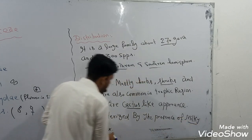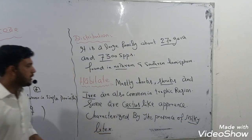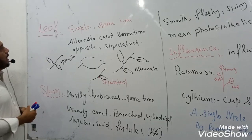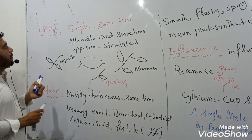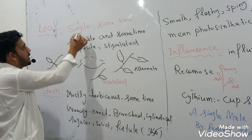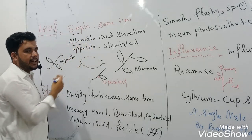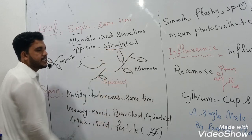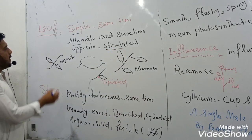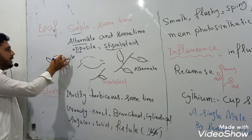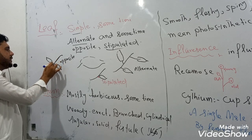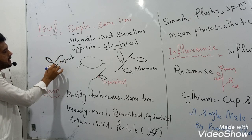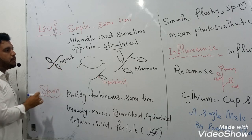This family is characterized by the presence of milky latex. When the members of this family are cut or broken, they produce a milky fluid. The family members have simple leaves, sometimes in alternate arrangement and sometimes in opposite arrangement, where the leaves are placed facing each other.